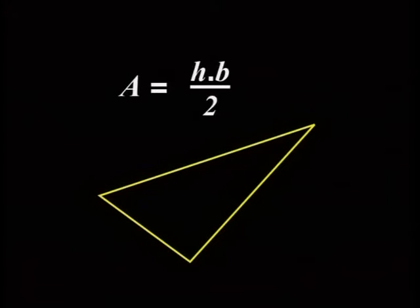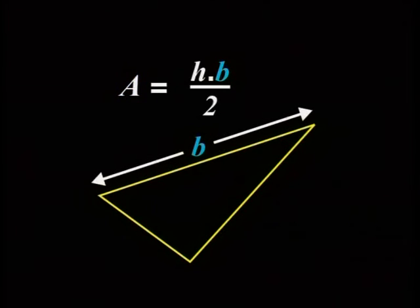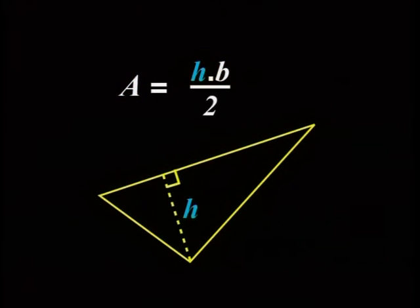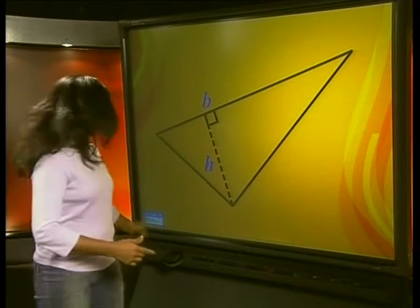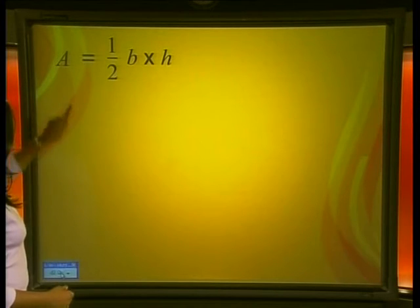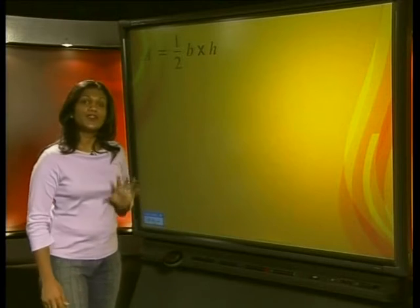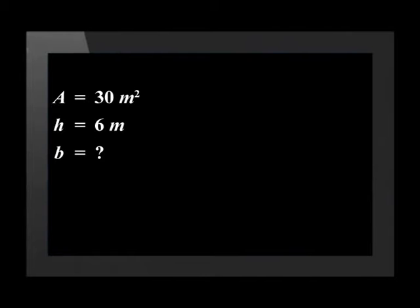One form of the formula is that A is equal to H times B all divided by 2, where A represents the area, B is a side, and H is the perpendicular height from a vertex to side B. You might also recognize this formula as area equals half of the base times height. Do you see that there are 3 unknowns here? Do you think that we could solve this equation if we had two of the values of the unknowns? For example, if A equals 30 meters squared and H equals 6 meters, could you solve for B?